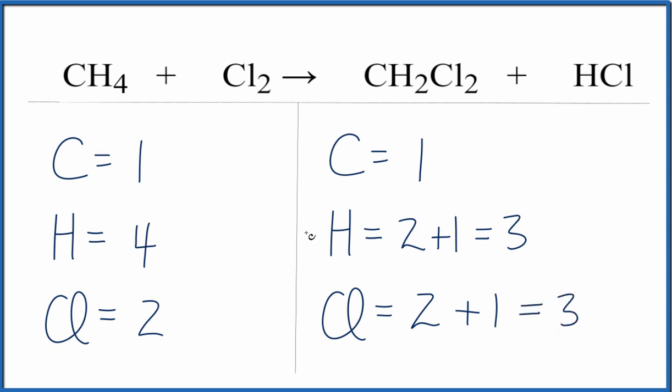Why don't we start by fixing the hydrogens? If we put a two in front of the HCl, that would change our hydrogens and chlorines. That would give us two hydrogens here and two here, which gives us four.